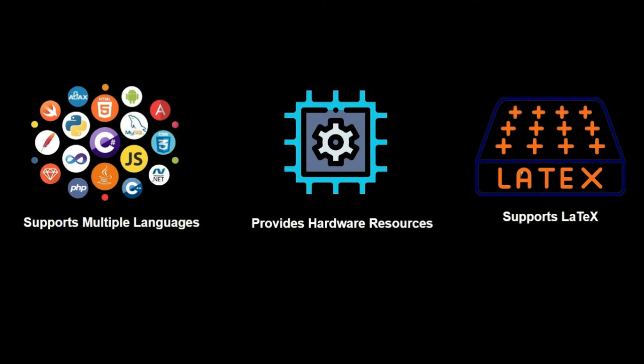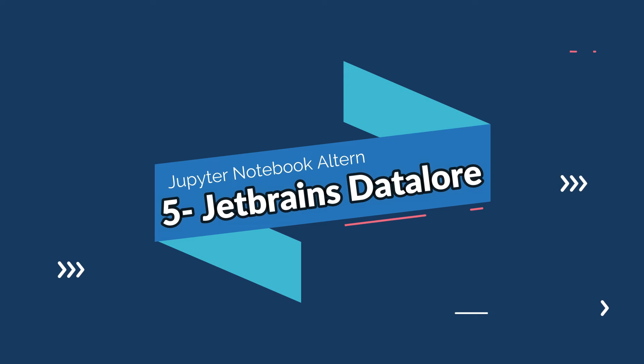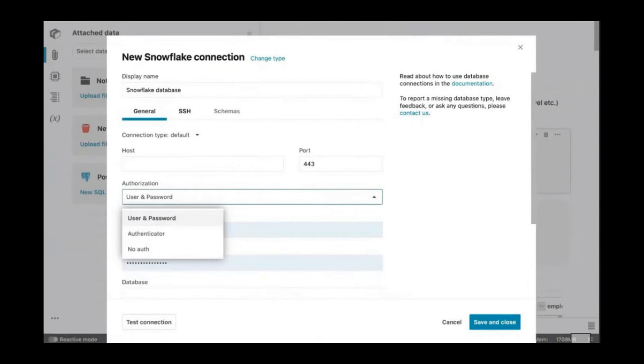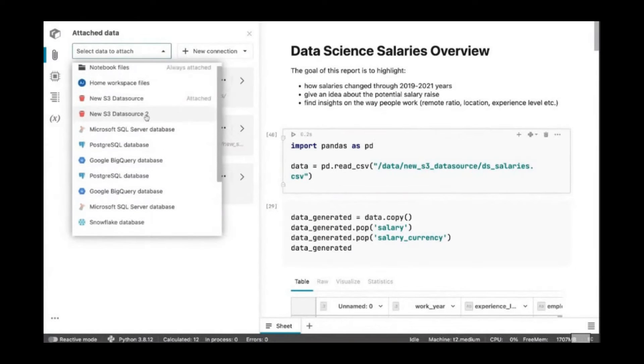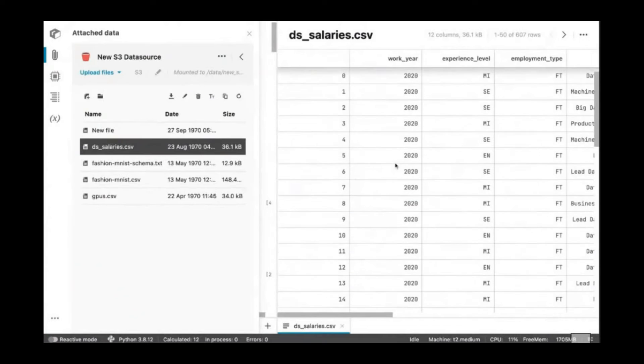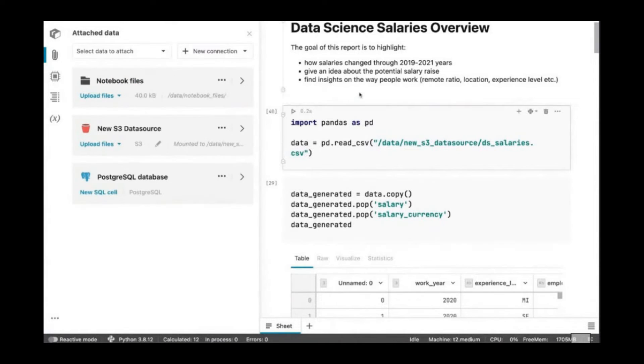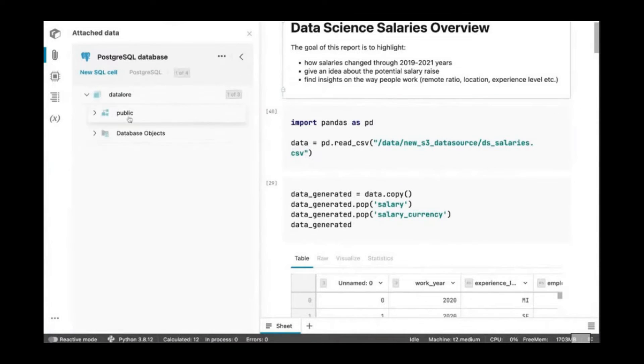On number six, we have JetBrains DataLore, which is a cloud-based data science platform that offers many of the same features as Jupyter Notebook as well as a number of additional capabilities. These capabilities include support for a wide variety of programming languages including Python, R, and SQL.